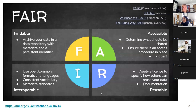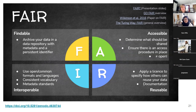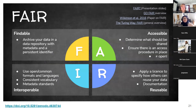FAIR stands for findable, accessible, interoperable, and reusable. Having your research online and open is ideal — you have to consider sensitive data and commercial interests, but if you can have everything open, that is wonderful, and GitHub allows you to do that.